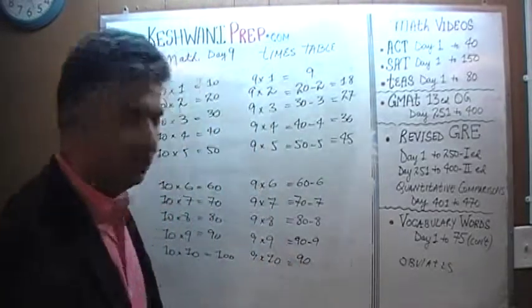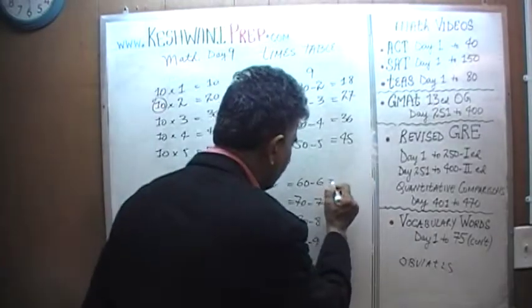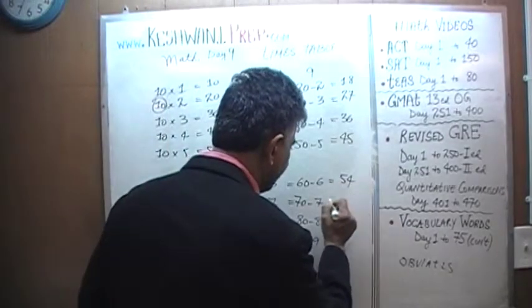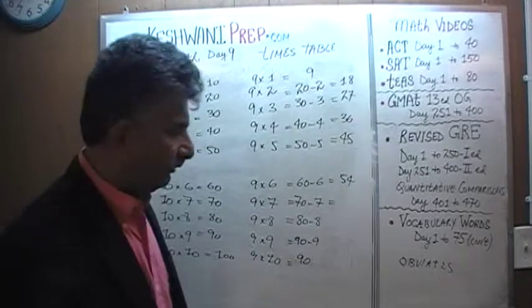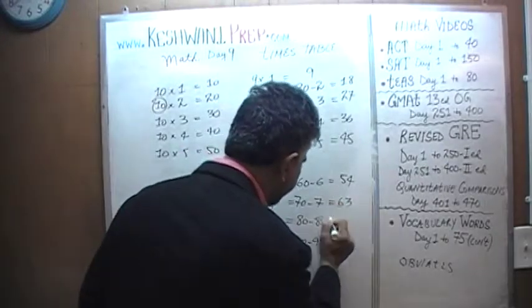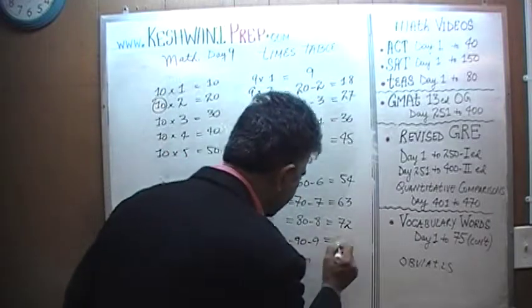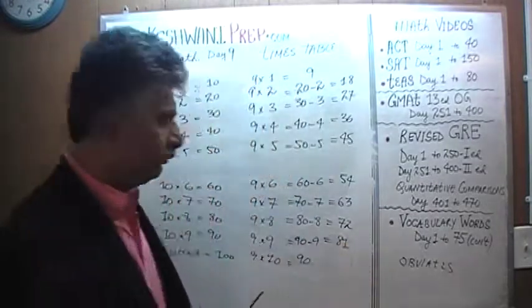That was very easy. So, all we have to do now is figure out what sixty minus six is. Sixty minus six is fifty-four. Seventy minus seven is going to be sixty-three. Eighty minus eight is going to be seventy-two. And ninety minus nine is going to be eighty-one. And that is all there is.